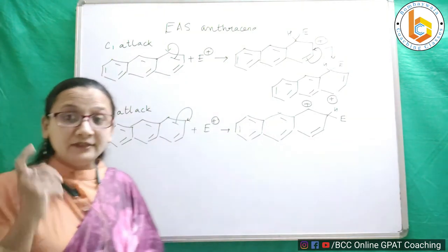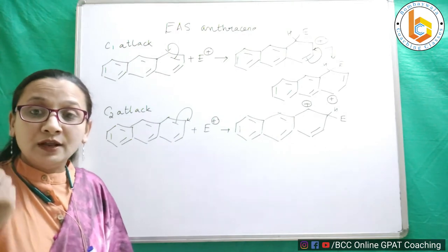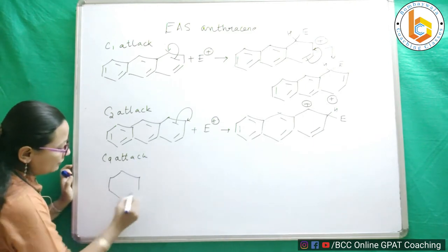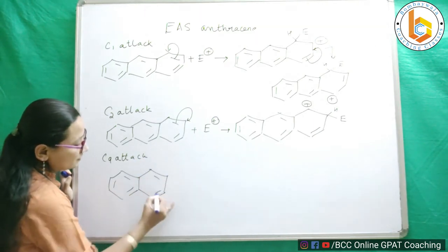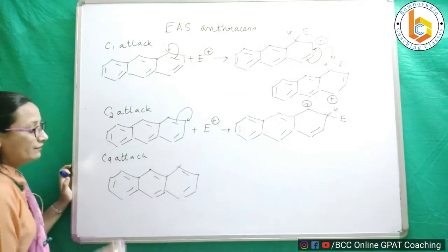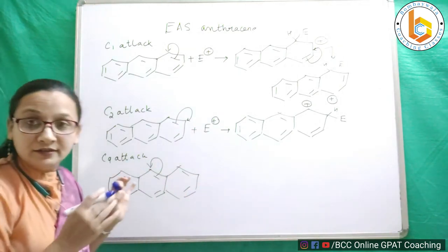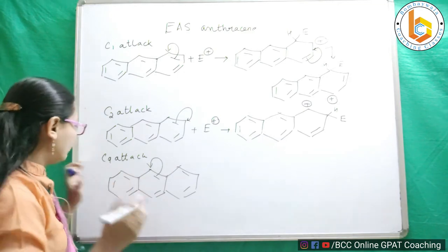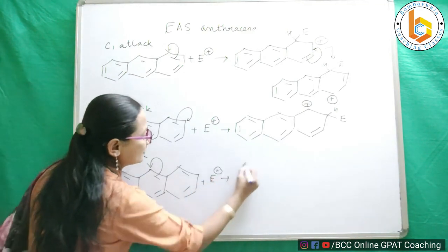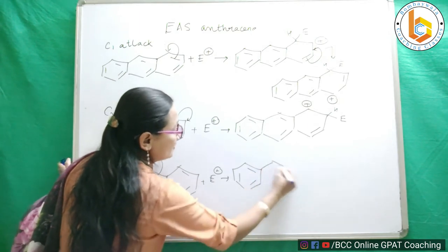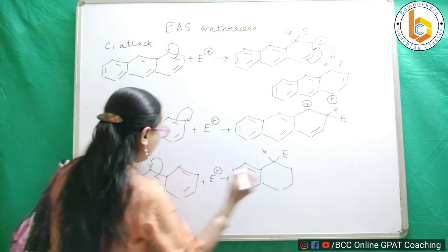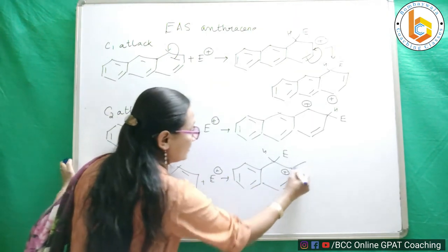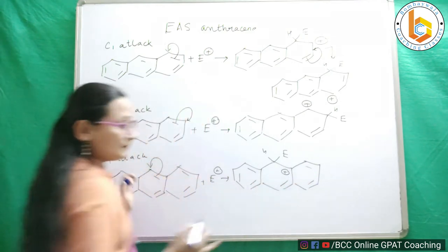Now the unique thing about anthracene: what happens when attack occurs at position 9? This is my C9 attack. I am making the carbon at C9 position electron-rich so that the electrophile comes and attacks. The electrophile comes and attacks on carbon 9. At the tail of this double bond a positive charge forms. The remaining rings are as they are.